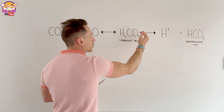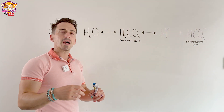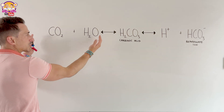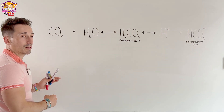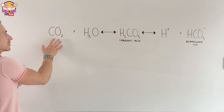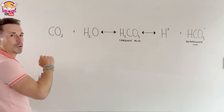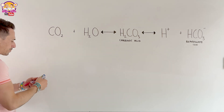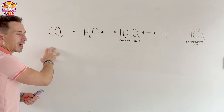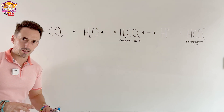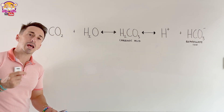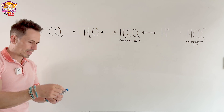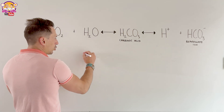This acid can release hydrogen ions and bicarbonate ions, but because the reaction is reversible, we can also go in the other direction to produce carbonic acid. Unlike other buffer systems, there's another side to this one involving carbon dioxide and water.